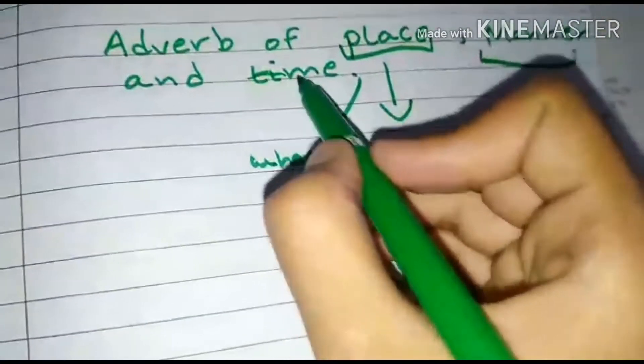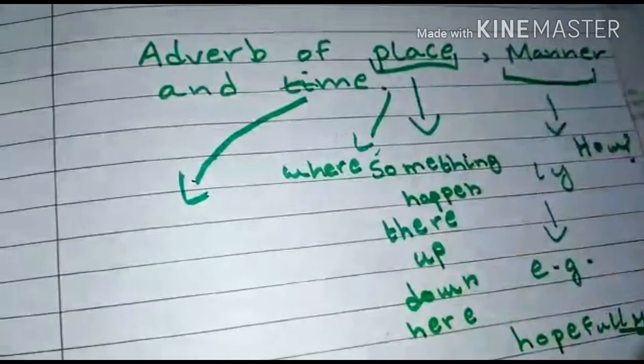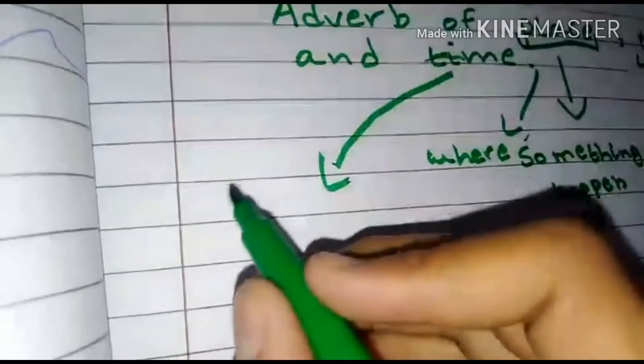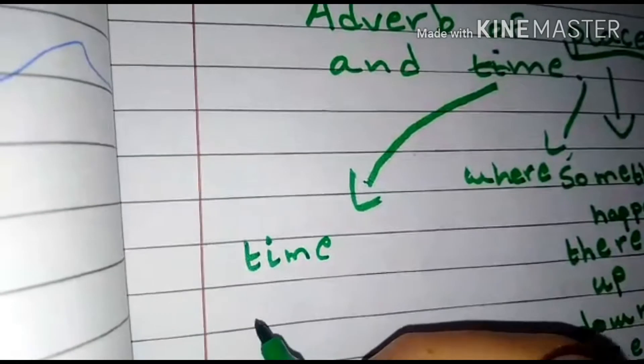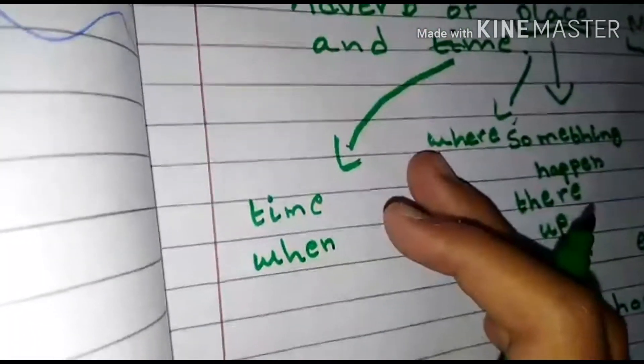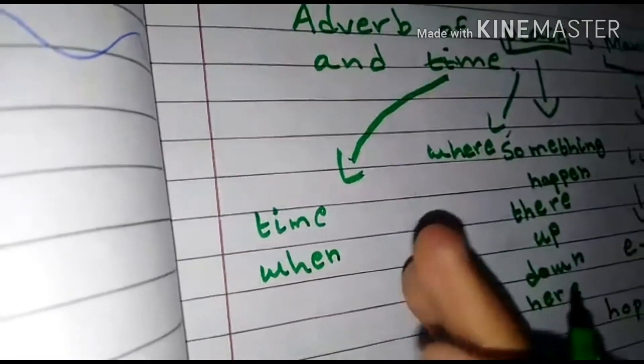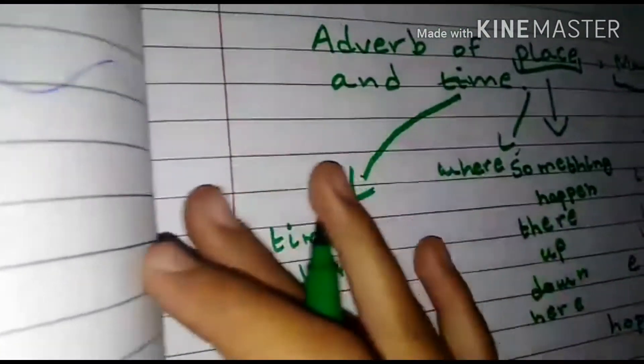Now next we have got adverb of time. So basically in adverb of time, it tells us about time. It's like really simple. It answers the question when. For example, night, three weeks ago, tomorrow. We use it like this.